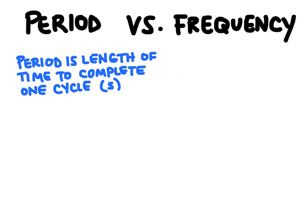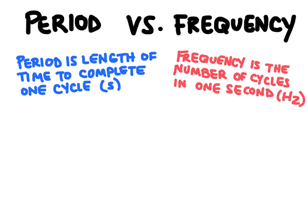Frequency, on the other hand, is the number of cycles that could be completed within one second. And we measure frequency in units of hertz. And when we're saying cycle, we're just talking about one wavelength.